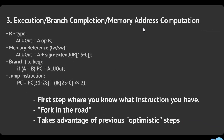At the end of stage two and the beginning of stage three is when you finally know what instruction you have. As you can see in step three, it's kind of a fork in the road — every single instruction goes through step one and step two the same way. As soon as you hit step three, you know what instruction you have, so you do different operations depending on the instruction type.